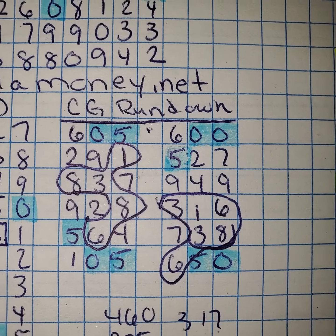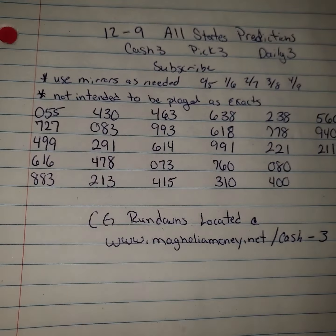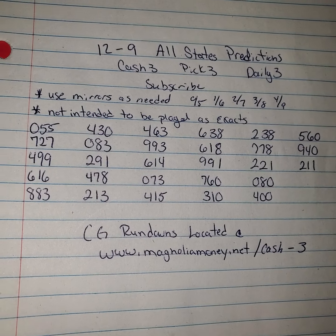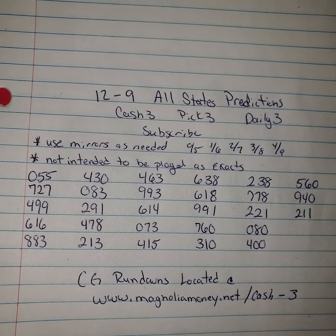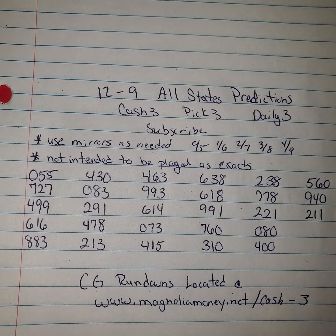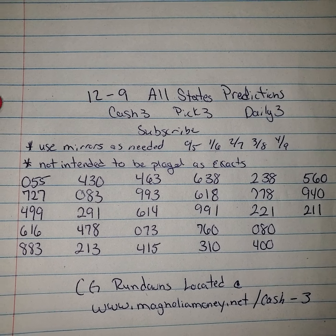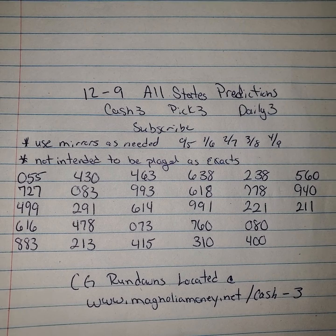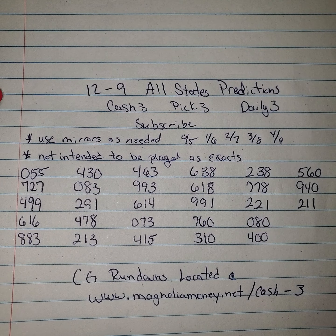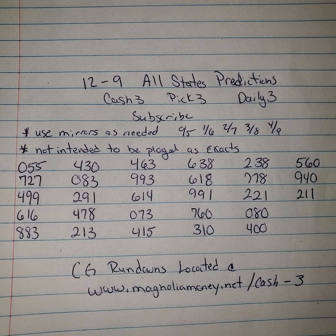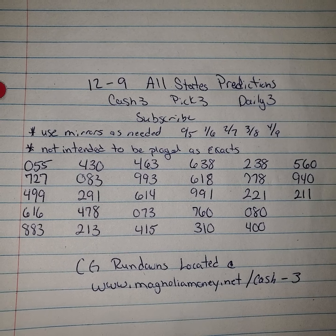It pretty much will cover All-States, so if you're interested in seeing more of that, you can feel free to do so. The CG color grid or converted grid rundowns are actually listed at magnoliamoney.net/cash-3, but you can also go straight to magnoliamoney.net and click on the cash 3 section. It'll take you there — scroll down until you see it, click it, and it'll open up above all other information on the page.